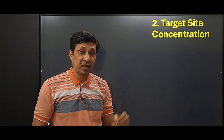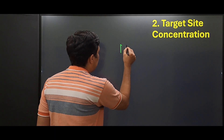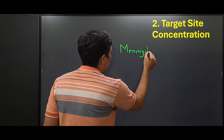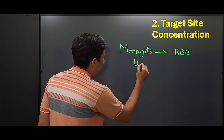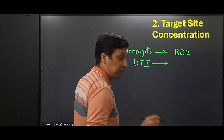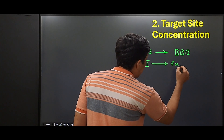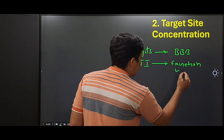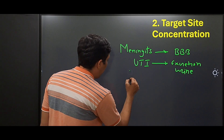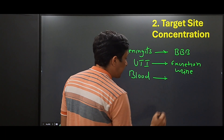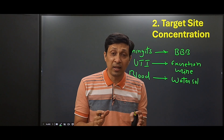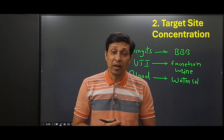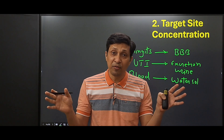The second principle of antibiotic therapy is that your antibiotic must reach the target site. For example, if there is meningitis, your antibiotic must cross the blood-brain barrier. For a urinary tract infection, prescribe an antibiotic that is maximally excreted unchanged in urine. For a bloodstream infection, prescribe a water-soluble antibiotic, as it will stay longer in the blood. A lipid-soluble antibiotic will diffuse into tissues.